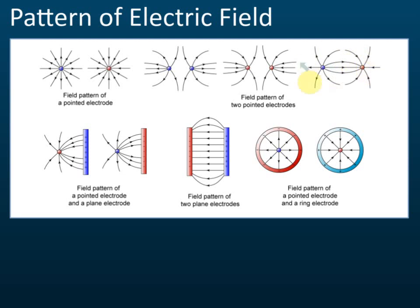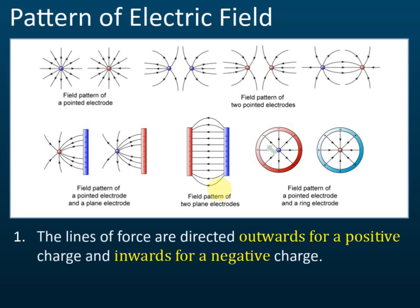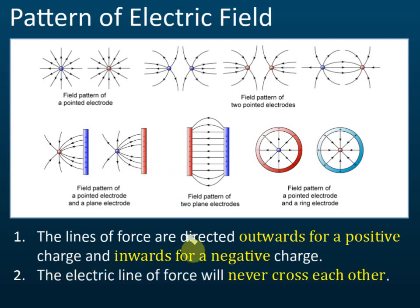If one charge is positive and one is negative, the field lines go from positive to negative. For one point charge near a plate, and for two parallel plates, the field lines come out from the positive plate and move into the negative plate. Note that field lines are directed outwards for a positive charge and inwards for a negative charge. Also, field lines will never cross each other — you will never see lines crossing.